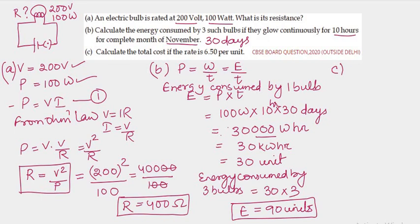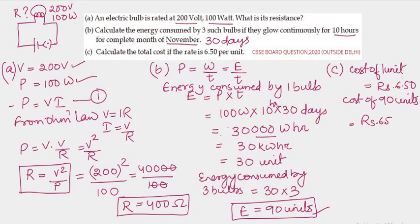Now come to the 3rd part. The 3rd part is asking what's the total cost if the rate is 6.50 per unit. So cost of 1 unit is Rs 6.50. So cost of how many units we have got here? 90 units will be Rs 6.50 into 90, which will be Rs 585. So cost is Rs 585.